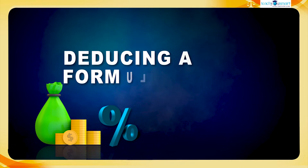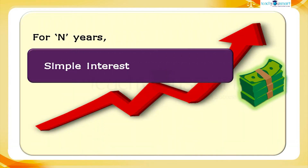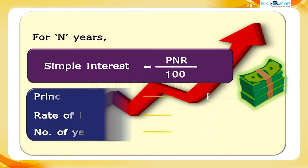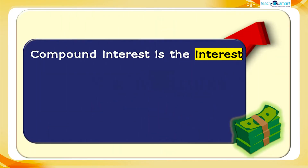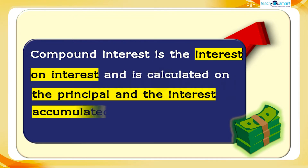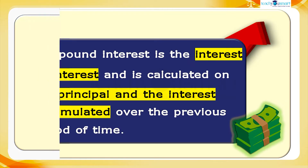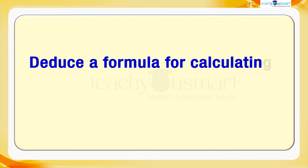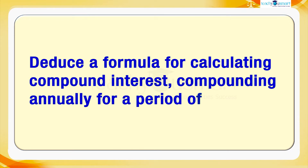In your previous sessions we have seen that the simple interest for n years is P×n×r divided by 100. We know compound interest is the interest on interest, calculated on the principal and the interest accumulated over the previous period of time. Now we are going to deduce a formula for calculating compound interest compounding annually for a period of n years.